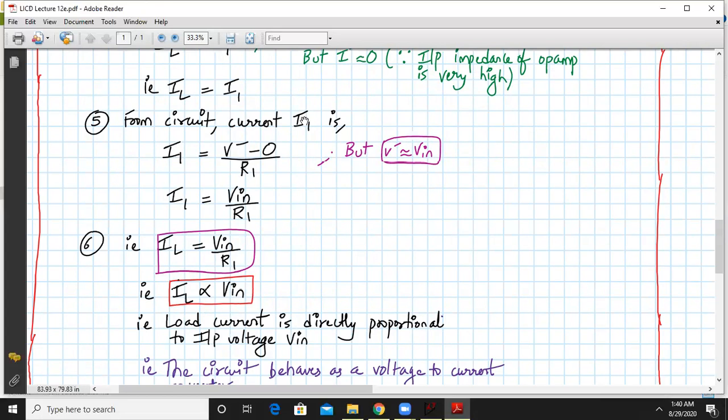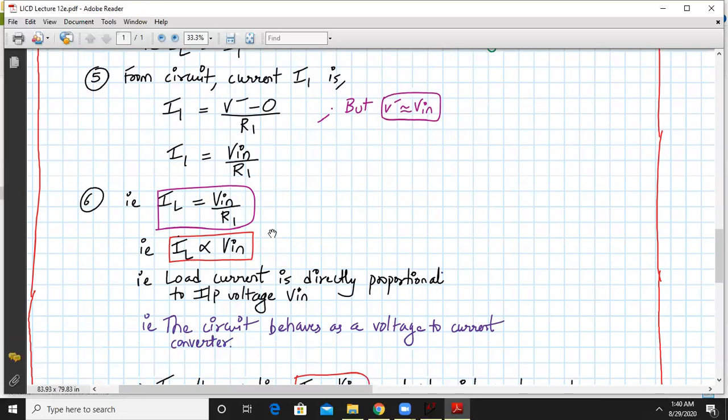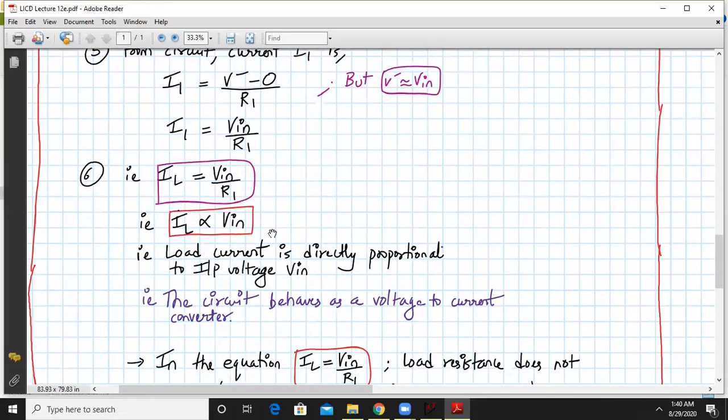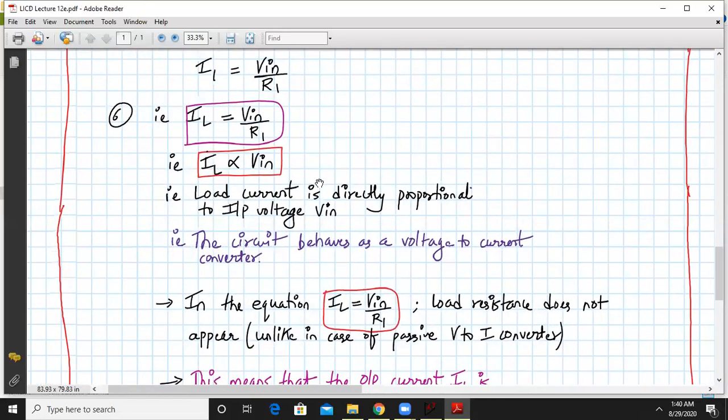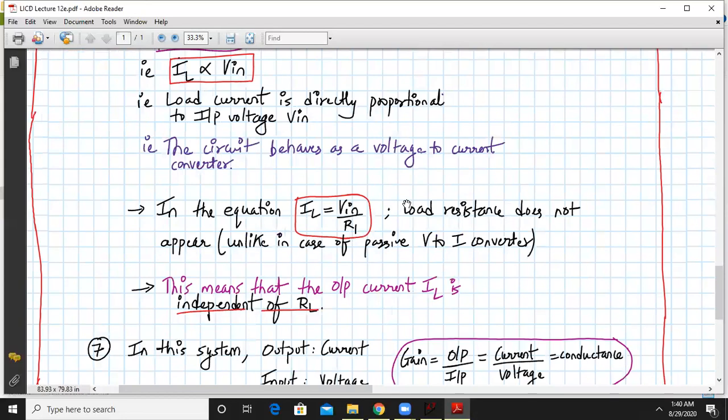The load current is directly proportional to the input voltage. This is one example of voltage to current conversion. In the above expression IL equals VIN upon R1, there is no load resistance appearing, unlike in passive V2I converter. That's a big advantage. The output current IL is independent of RL.